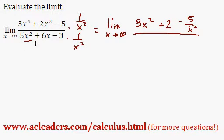All over 5x squared times 1 over x squared, which is just 5, plus 6x times 1 over x squared, which is just 6 over x. And finally, negative 3 times this is negative 3 over x squared.